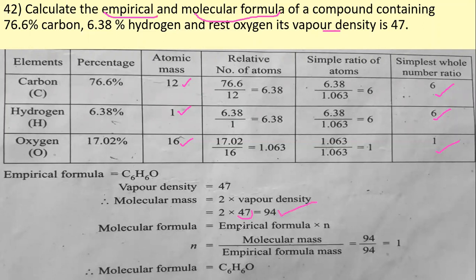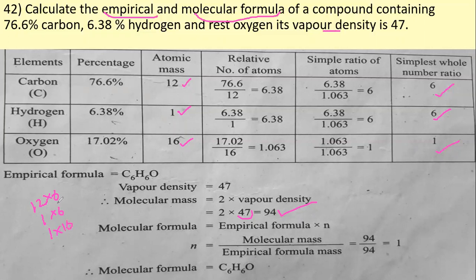The molecular formula is empirical formula × N, where N = molecular mass ÷ empirical formula mass. For C₆H₆O: carbon contributes 12×6 = 72, hydrogen contributes 1×6 = 6, and oxygen contributes 16×1 = 16. The total empirical formula mass is 94.